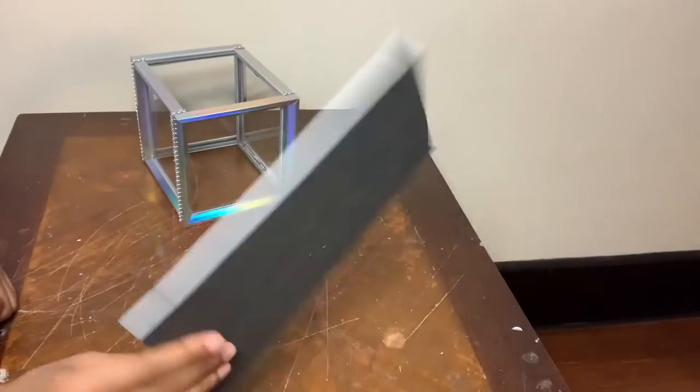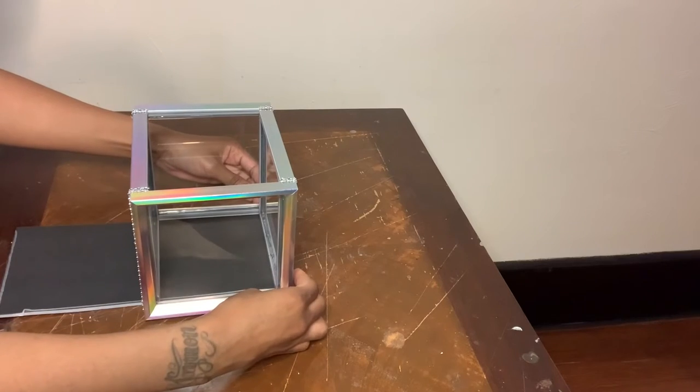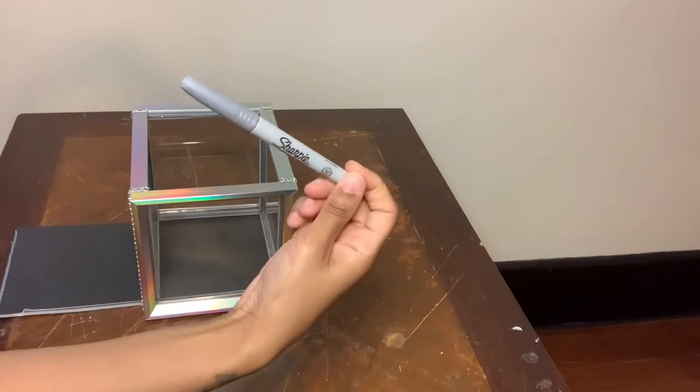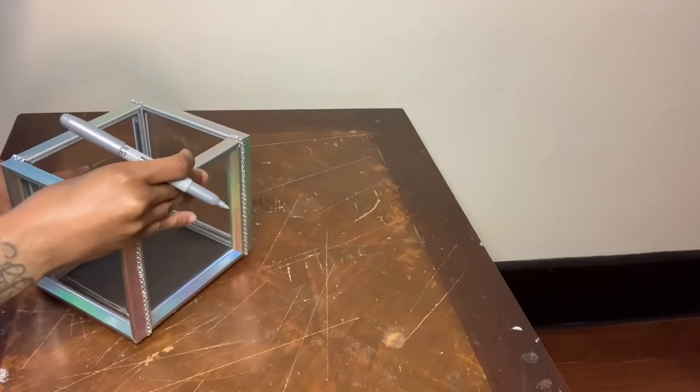Now I'm going to glue it to the bottom of my box. I have a silver Sharpie. I'm going to trace a line then use my exacto knife to cut the foam board.